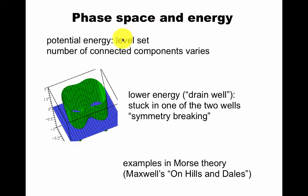Phase space has a direct relation to energy. Potential energy could be thought of as a level set. The number of connected components varies. When you drain the well, the water will get stuck in one and two. This is symmetry breaking because before you drain it down here, there would just be one connected component. The surface would be up here. There's an example of this in Morse theory. And Maxwell, who thought about electromagnetism, also thought about this.